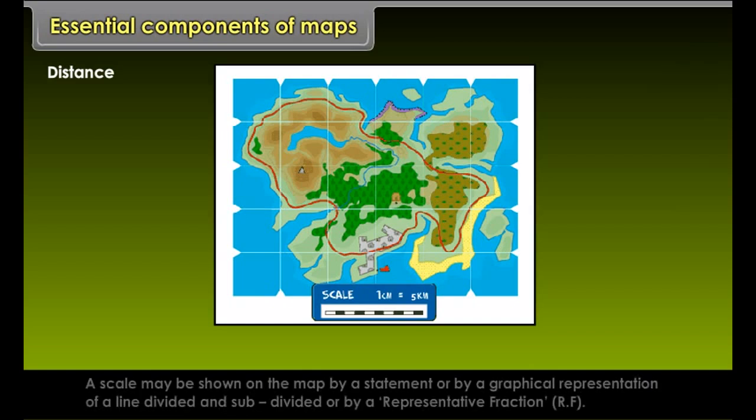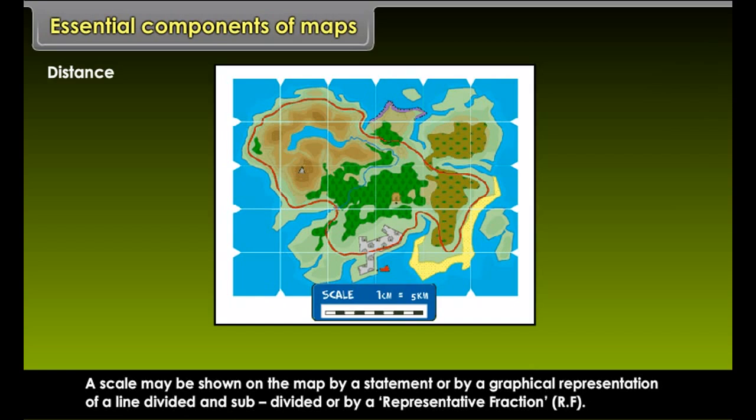Essential Components of Maps. The essential components of maps are the following: Distance, Direction, and Symbol.